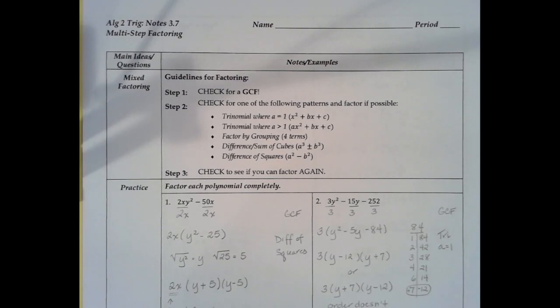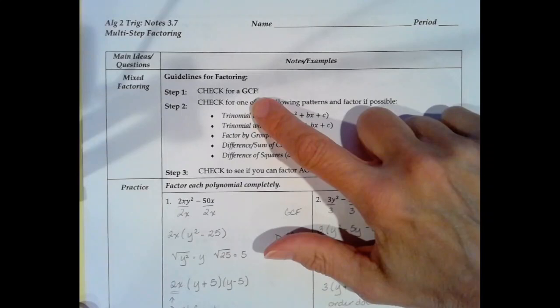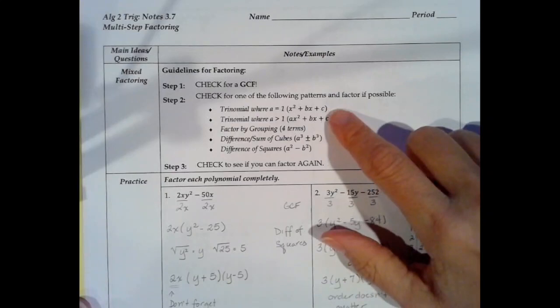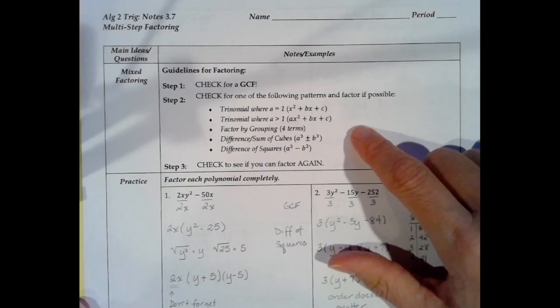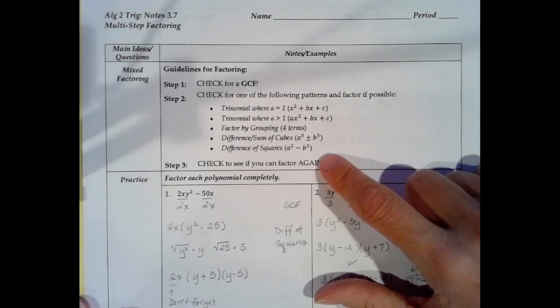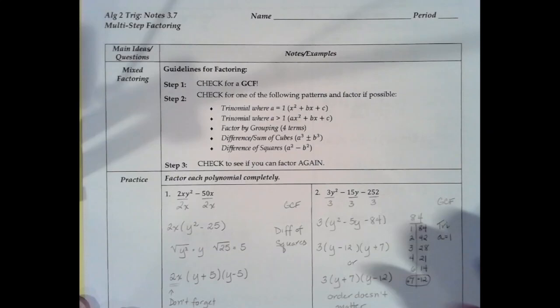This is the supplemental video for notes 3.7 multi-step factoring. Multi-step factoring or mixed factoring means simply that you're going to have to use more than one method to factor a polynomial. Step one is to always check for a greatest common factor. Then you're going to have to check for one of the following patterns: a trinomial where a equals 1, a trinomial where a is greater than 1, factor by grouping if you have four terms, a difference or sum of cubes, a difference of squares, or multiple combinations of any of these.